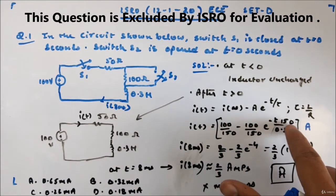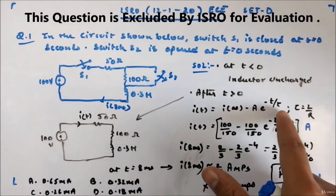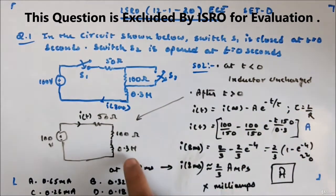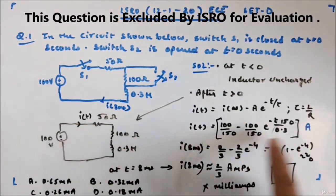So this will be the current: e to the power minus t, this is 150 R divided by L. Since tau is L by R, L is in denominator, R will be in numerator. L is 0.3, 150 is resistance, so this will be the current.